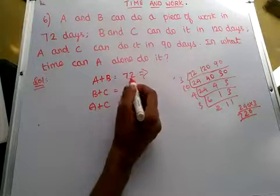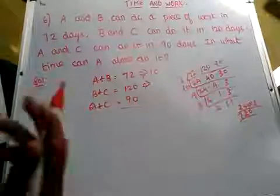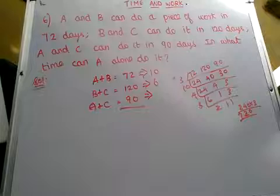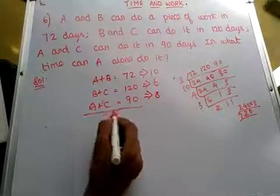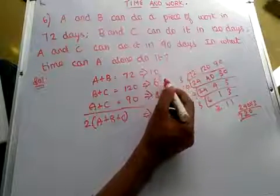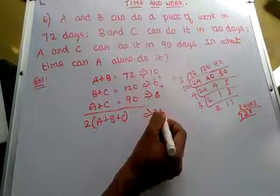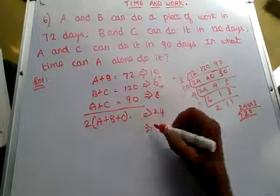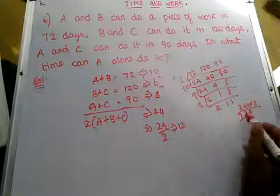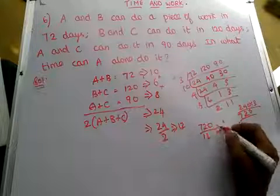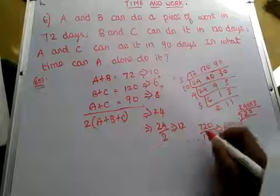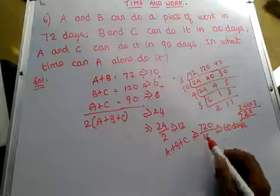Dividing: 720/72 = 10, 720/120 = 8, and 720/90 = 8. As in the previous problem, 2 into (A+B+C) gives a total of 24. A+B+C = 24/2 = 12. Then divide the LCM: 720 divided by 12 equals 60. So A+B+C can finish the work in 60 days.